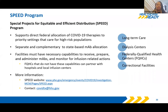The SPEED program is separate and complementary to the state-based monoclonal antibody allocation process. Facilities will have to demonstrate that they have the capability to receive, prepare, and administer monoclonal antibodies, as well as the ability to monitor for any infusion-related adverse reactions. FQHCs that do not have these capabilities have the ability to partner with community hospitals or local infusion centers to be eligible. Priority groups emphasized through the SPEED program include long-term care, dialysis, correctional facilities, as well as FQHCs.